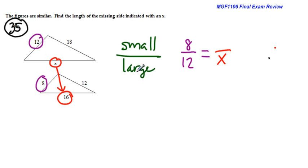X is in the large triangle so it goes in the bottom. 16 is in the small one. This is why I think it's really important that you write the words smallest to large first so that you're careful in setting it up.